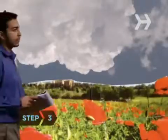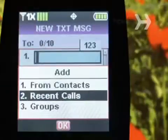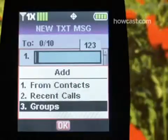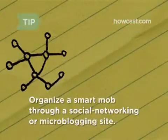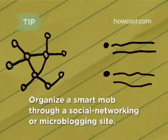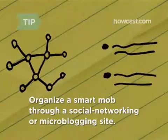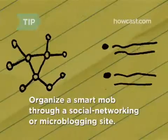Step 3: Make sure you're prepared. Scope out your location, get contact information for the people you plan to invite, and set up a group list on your phone so you can text everyone by hitting just one button. You can also organize a Smart Mob through a social networking or microblogging site. There are even websites dedicated to creating and maintaining group lists.